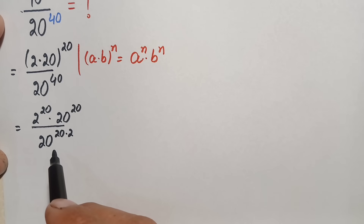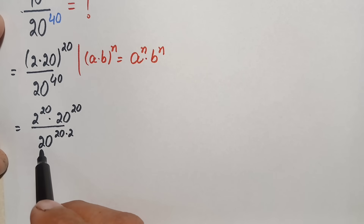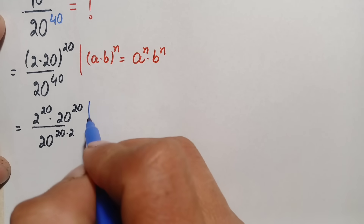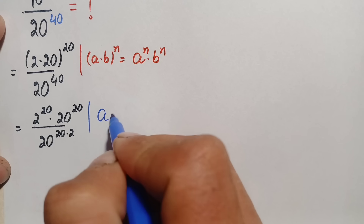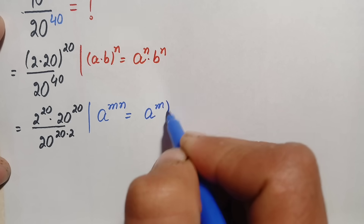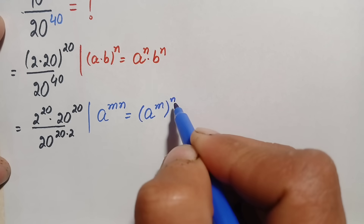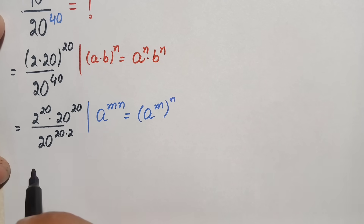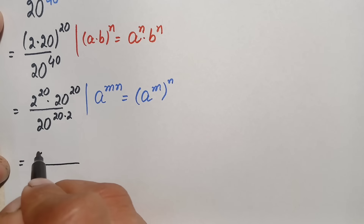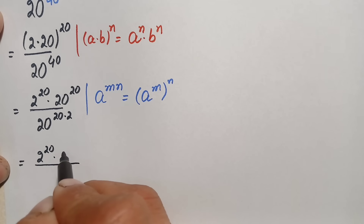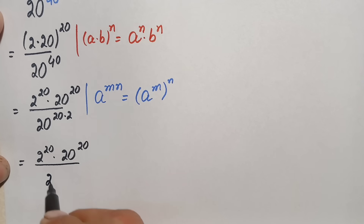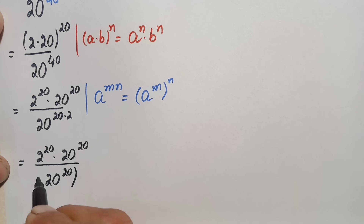In the denominator we will use another exponential identity: a raised to power n times n equals a raised to power n, whole raised to power n. Using this identity, the denominator becomes 20 raised to power 20, whole squared.